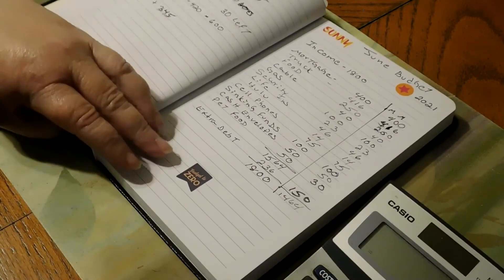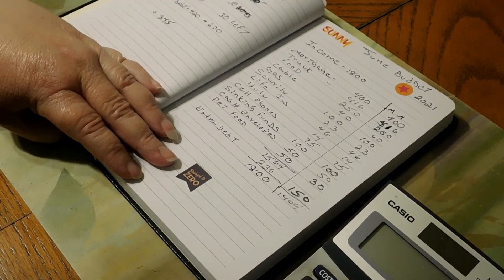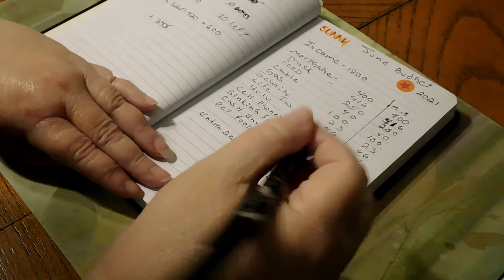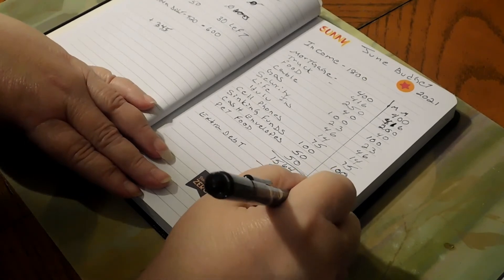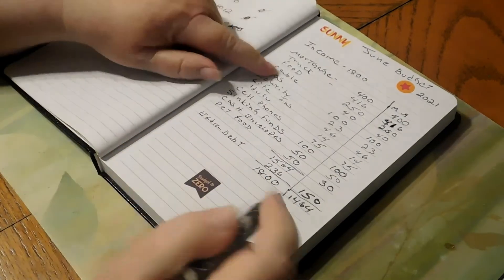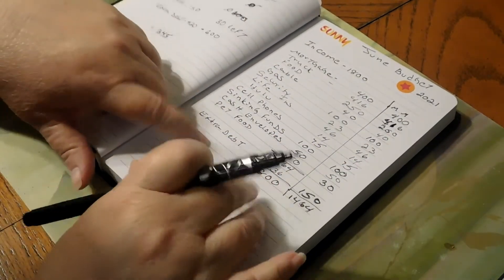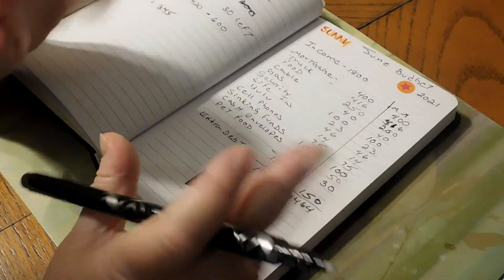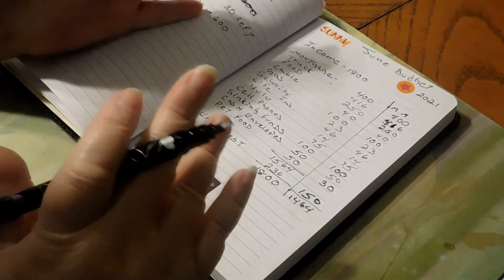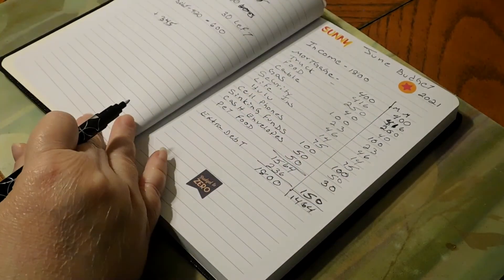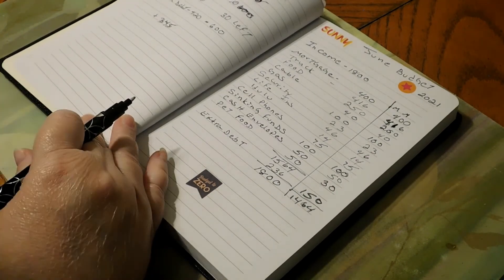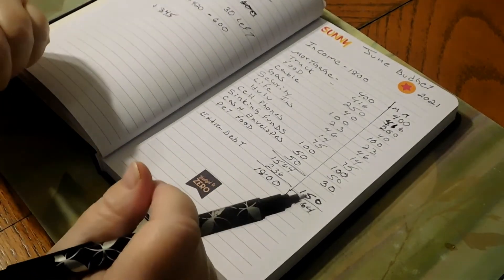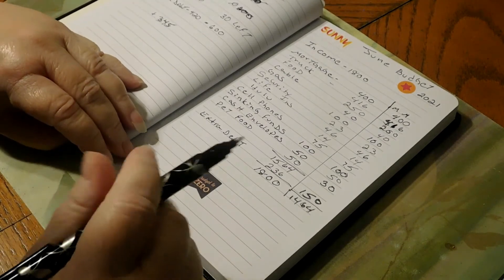So $1,800 minus $1,464 still gives us about $336 for the rest of the month, which is going to be more gas, hopefully more of an extra debt payment, and then we'll see with the pet food or anything else and see if we stay under the $50 or not.